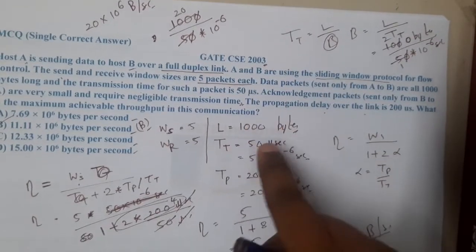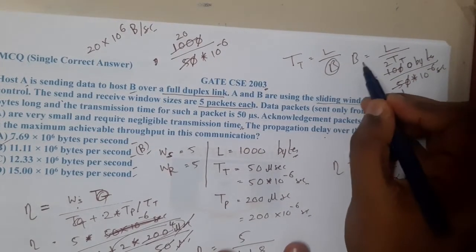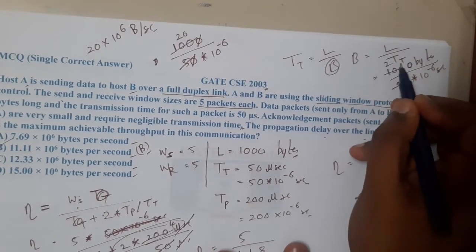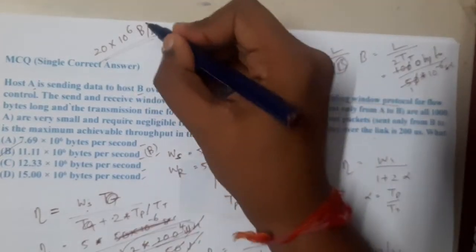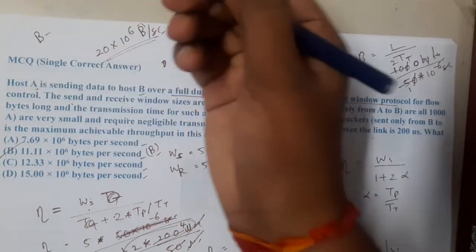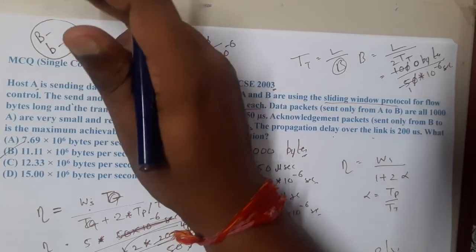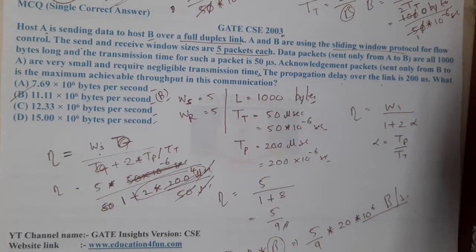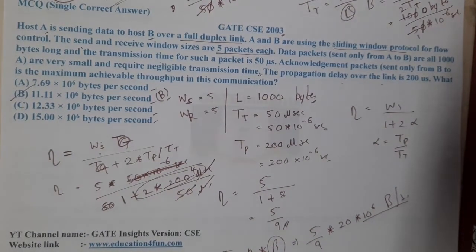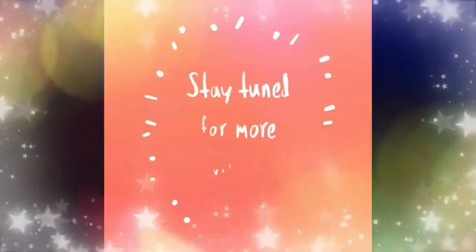To recap: since bandwidth wasn't given, we derived it from B = L/TT = 20×10⁶ bytes/s. Note that capital B denotes bytes and small b denotes bits. This is a direct formula-based question. In the next lecture we will continue with the next question. Thank you — like, share and subscribe for more videos.